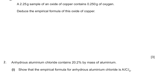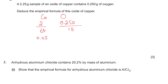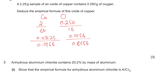A 2.25-gram sample of a copper oxide contains 0.25 g of oxygen, so copper is 2.0 g. Dividing by their Ar values (64 and 16) gives 0.03125 and 0.01563. Dividing by the smaller gives a ratio of 2:1, so the empirical formula is Cu2O — copper(I) oxide.